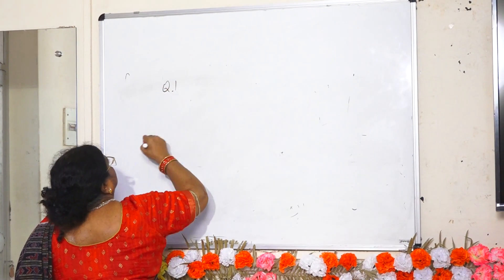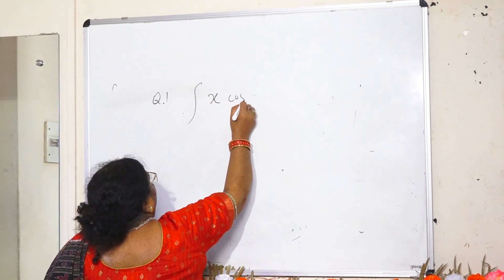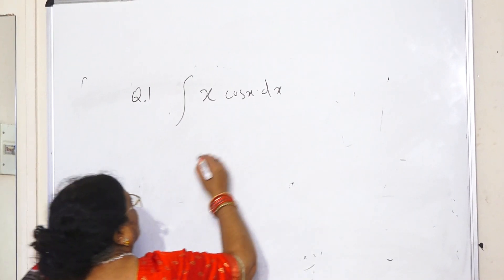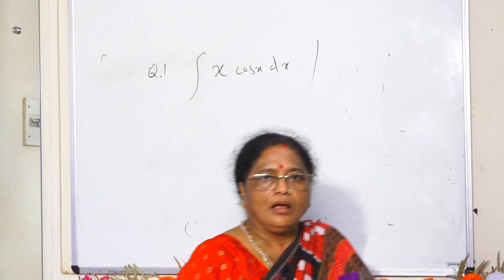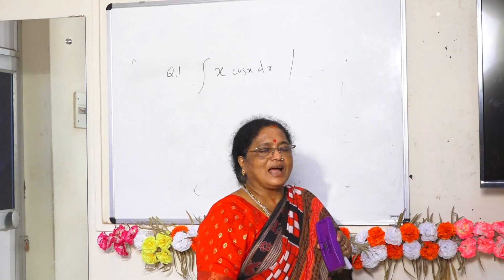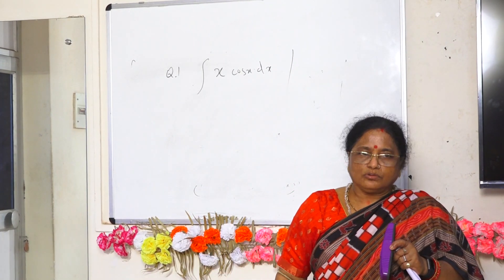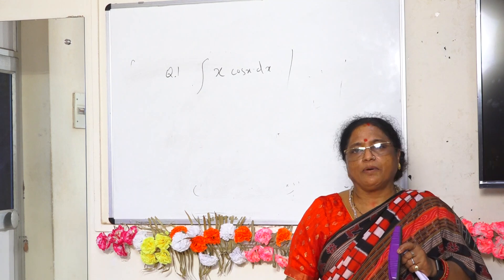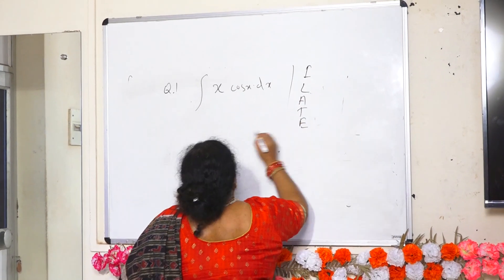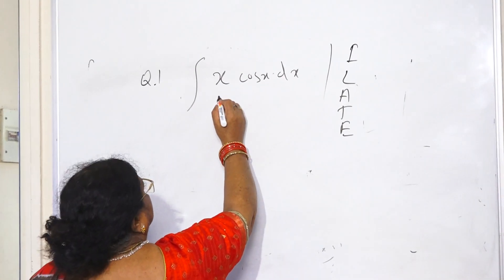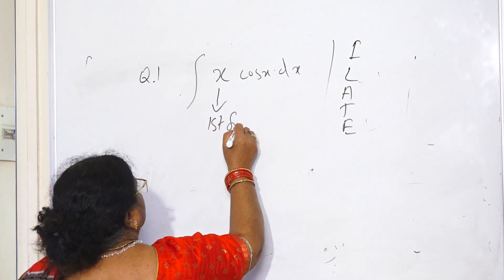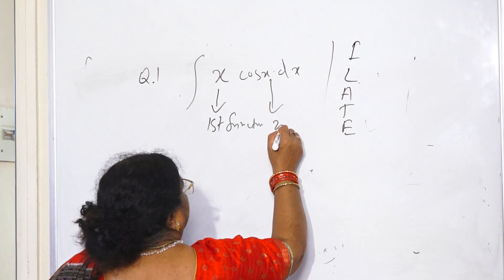Problem number one: integrate x·cos x with respect to x. Here, we first choose the first function. By ILATE, x is the algebraic function so it is the first function, and cos x is the second function.